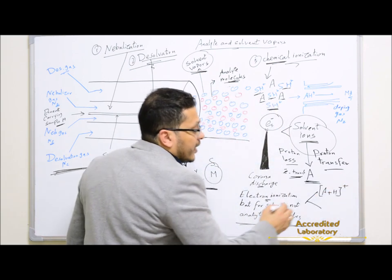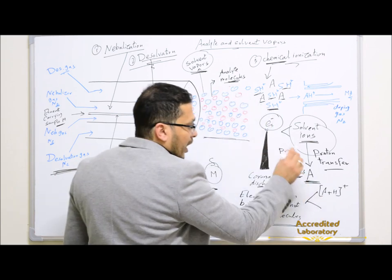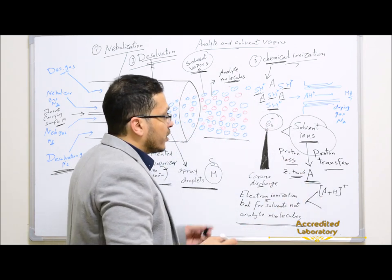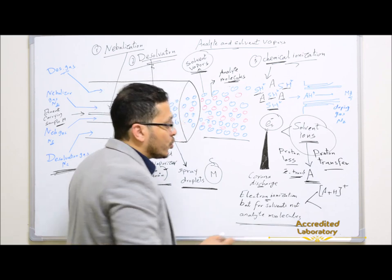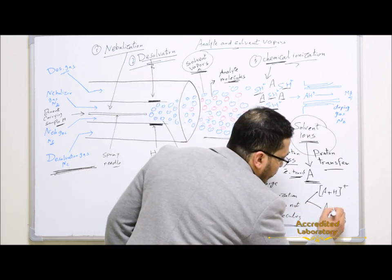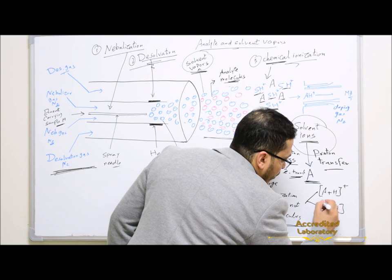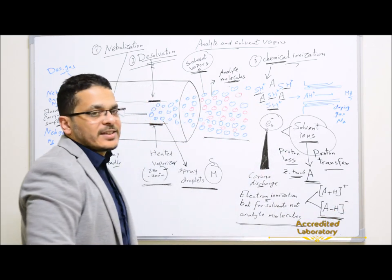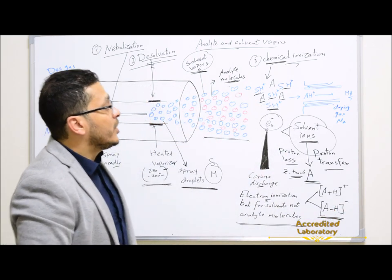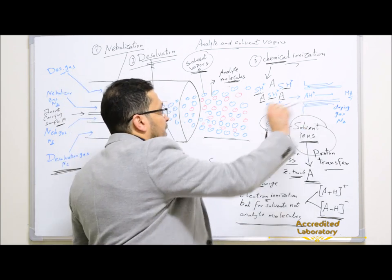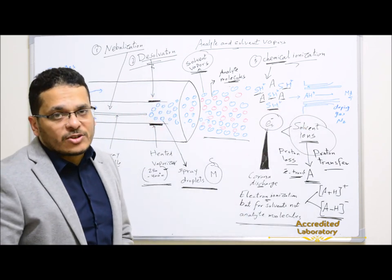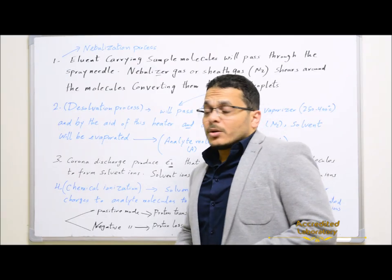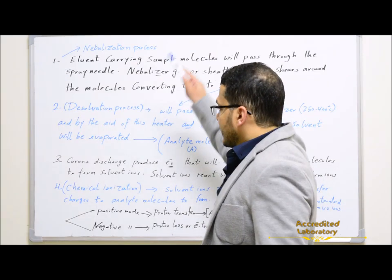In case of negative mode, these solvent ions will also make electron transfer or proton loss to form deprotonated species. Only these analyte ions will be transferred to the mass analyzer for analysis of molecular mass and measurement of ion intensity. These are the steps in detail.